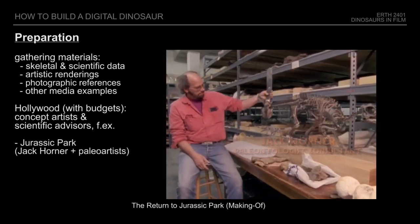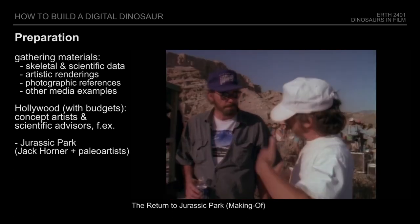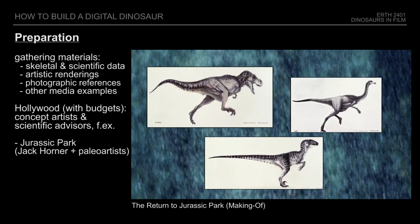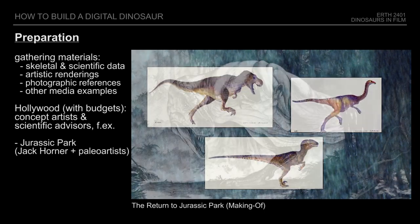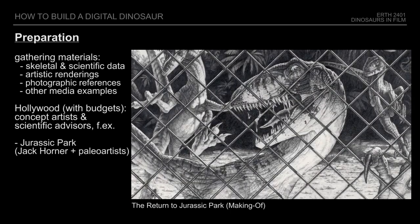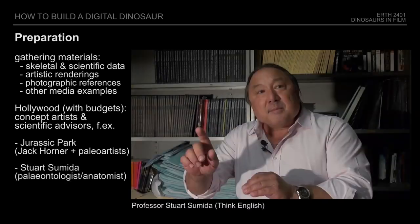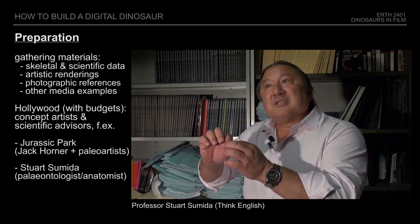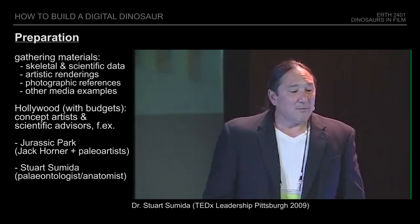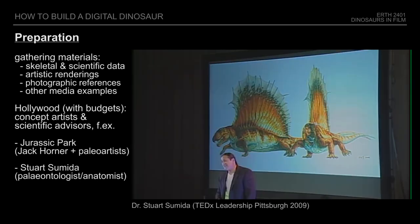Famously, paleontologist Jack Horner has been credited as a scientific advisor for the Jurassic Park films, and the production of the first film employed various renowned paleo artists as consultants. Another person to highlight would be Stuart Sumida, who, as a paleontologist and anatomist, has consulted many animation and visual effects projects for different studios and film schools around the world.